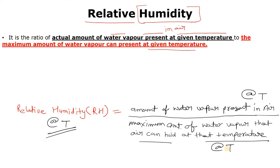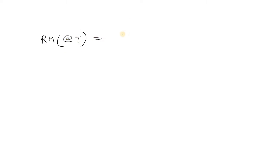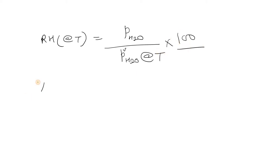We also express relative humidity with respect to pressure. It can also be defined as the ratio of the partial pressure of water vapor to the equilibrium vapor pressure of water vapor at that given temperature. So RH at temperature T equals the partial pressure of water divided by the vapor pressure of water at temperature T. If we multiply by 100, we express it as percentage relative humidity.